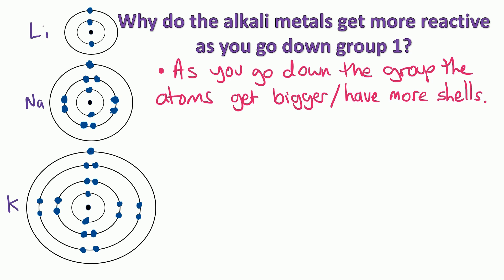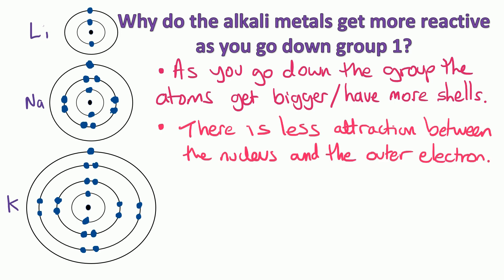These patterns are sometimes described as trends as you go down the group. If a question asks for the trend down group 1, it just means: what is the pattern, what's changing? The atom is getting bigger, which means there's less attraction between the nucleus and the outer electron. Think about two magnets — if they're further apart, there's less magnetic attraction between them.